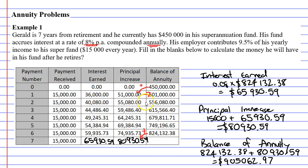We need to enter this into our blank space: $905,062.97. And that concludes our video on example one. Remember to read the description below for links to work booklets that relate to this video.